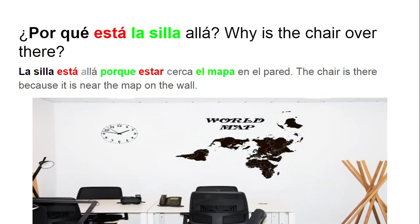¿Por qué está la silla allá? — Why is the chair over there? La silla está allá porque está cerca el mapa en el pared. — The chair is there because it is near the map on the wall.